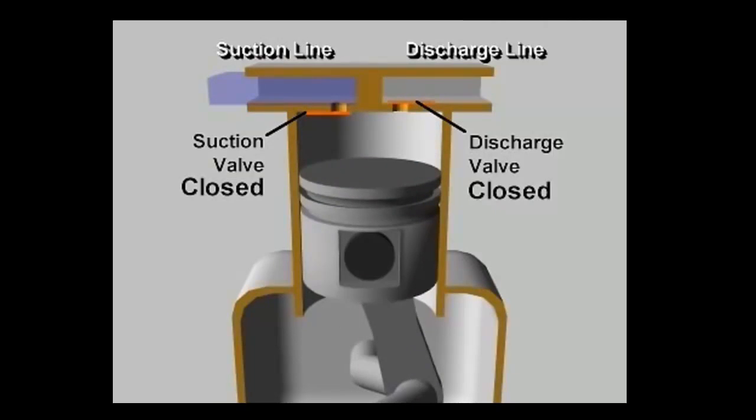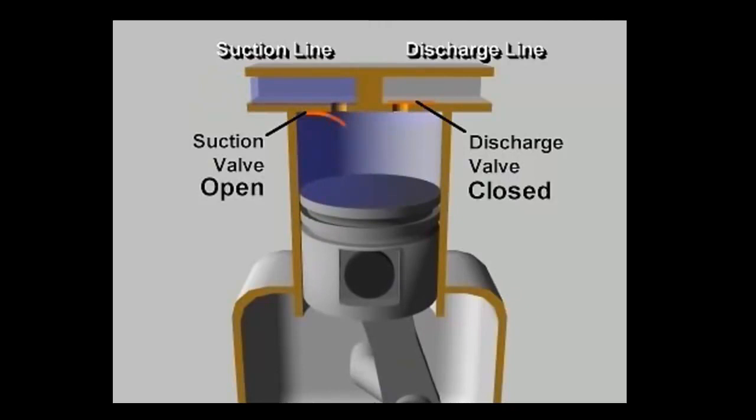Because both valves are closed, the downward moving piston reduces the pressure in the cylinder. As the pressure in the cylinder falls below the low side pressure in the suction line, the pressure difference opens the suction valve, letting refrigerant vapor flow into the cylinder.